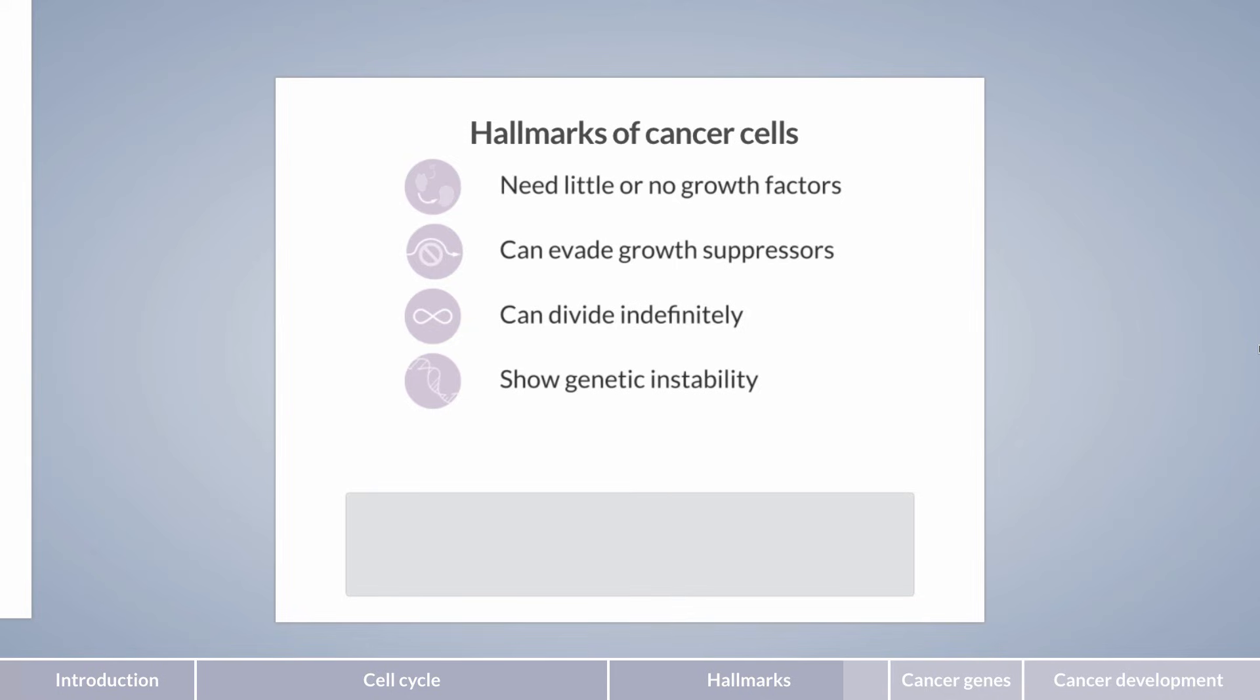Fifth, another hallmark is the disabling of apoptosis. As a consequence, damaged cells are not neutralized. In other words, cancer cells evade programmed cell death. The acquisition of these hallmarks and other cell characteristics are not the result of a single event, but the accumulation of DNA damage over time. Let's take a closer look at the relevant genes.